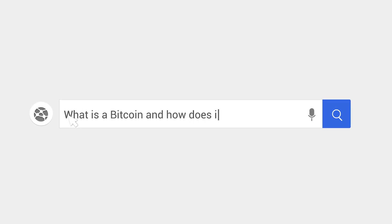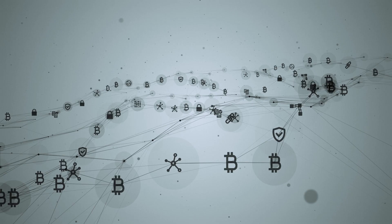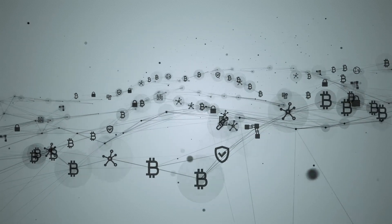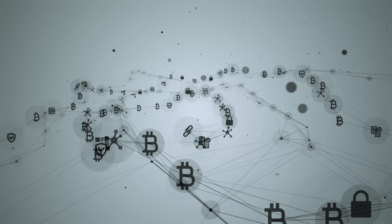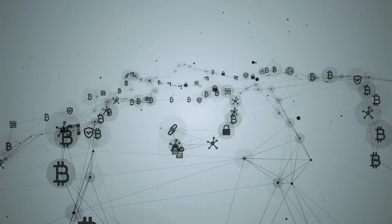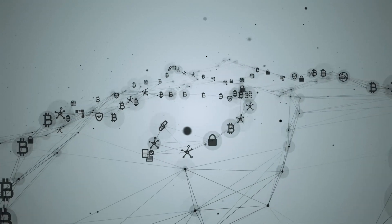I could probably answer that in one sentence: Bitcoin is a digital or virtual currency that uses peer-to-peer technology to facilitate transactions based on the blockchain. Now as much as that is correct, if we just left it there you still wouldn't know what Bitcoin is or have a technical understanding of it as a currency.